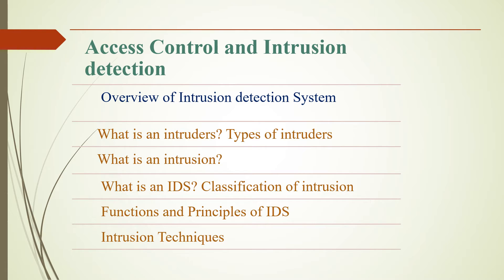Overview of Intrusion Detection System: An intrusion detection system is a system that monitors network traffic for suspicious activity and issues alerts when such activity is discovered. It is a software application that scans a network or a system for harmful activity or policy breaching.